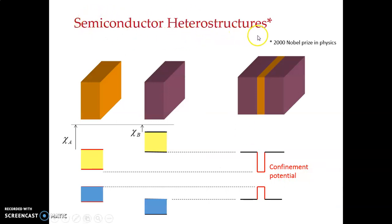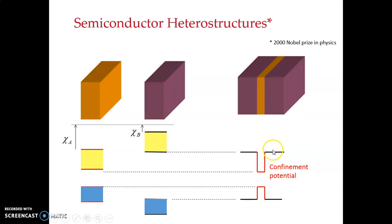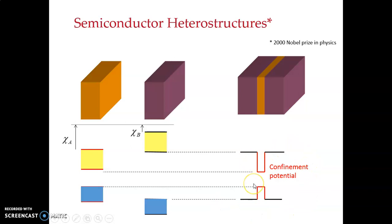Semiconductor heterostructures involve combining two different semiconductors to form a composite, providing a confinement potential. This is the energy gap for one particular semiconductor, and another energy gap for another semiconductor. When you combine them, you get a combined confinement potential energy gap.